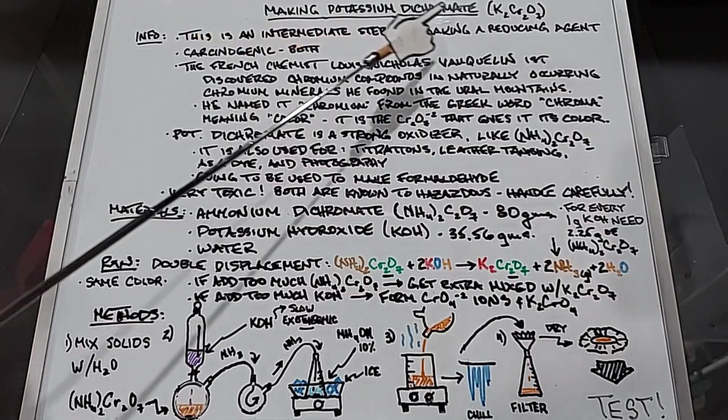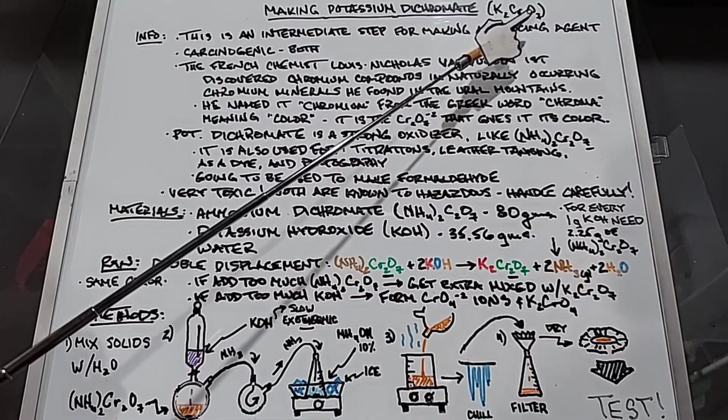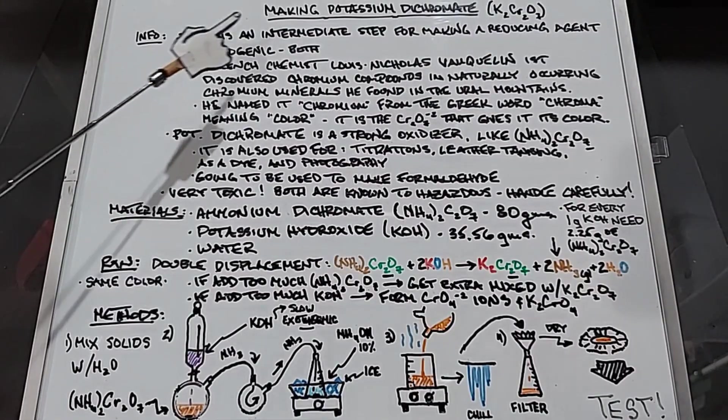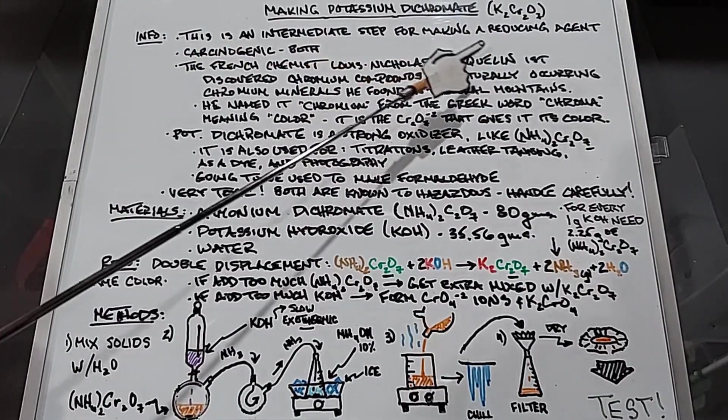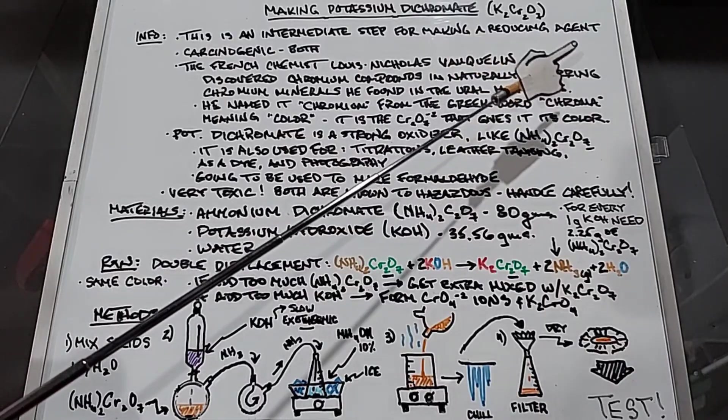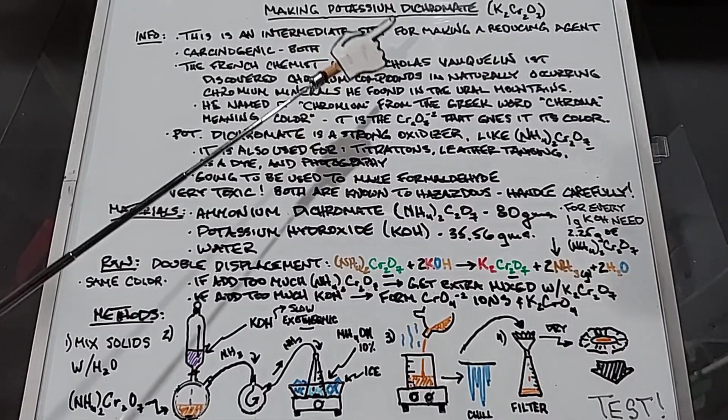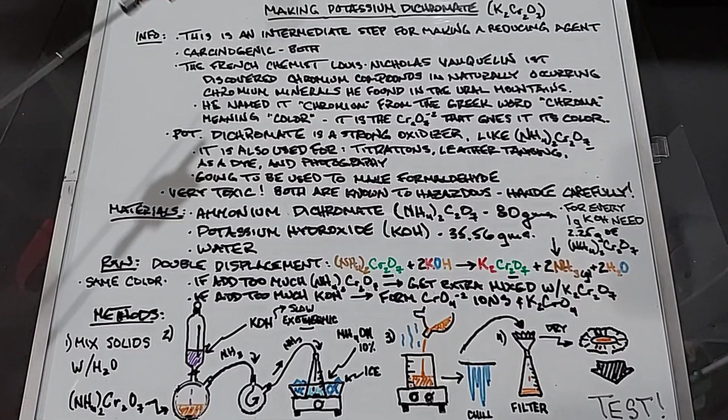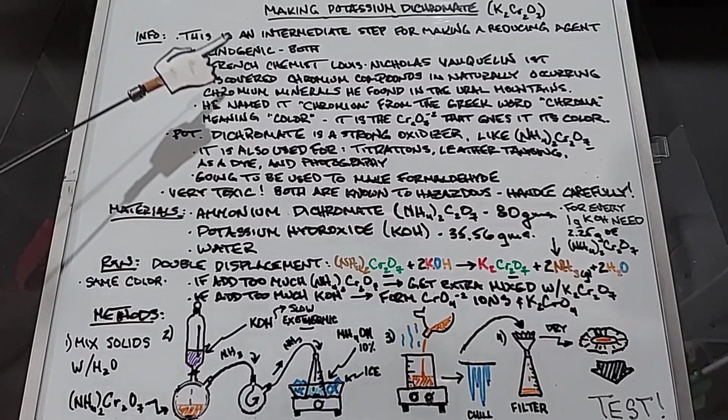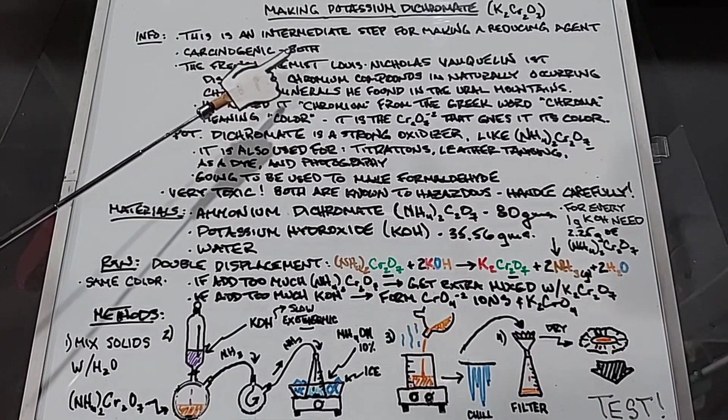This video covers making potassium dichromate, K2Cr2O7. The reason I'm doing this is because it's an intermediate step for making a reducing agent. I'll talk about that more later. To make our potassium dichromate, we're going to be using ammonium dichromate. Just as a warning, both are known to be carcinogenic and very dangerous to work with.